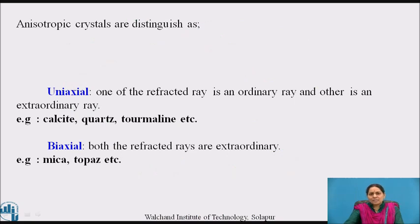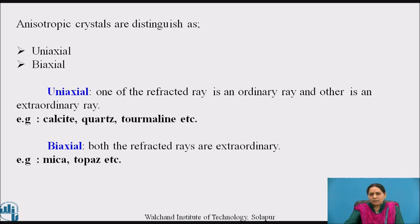Anisotropic crystals are further classified as uniaxial and biaxial. In a uniaxial crystal, one of the refracted rays is ordinary and the second is extraordinary. Calcite, quartz, and tourmaline are examples of uniaxial crystals. In a biaxial crystal, both the refracted rays are extraordinary. Mica and topaz are examples of biaxial crystals.